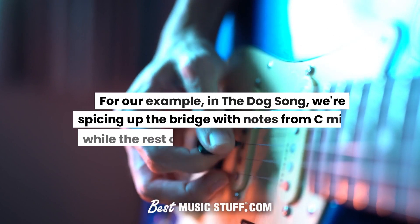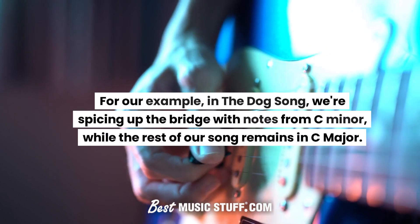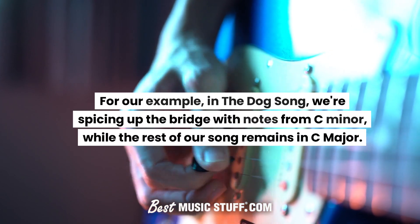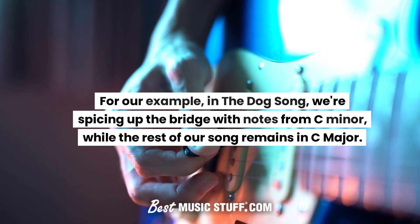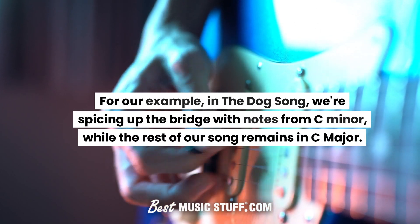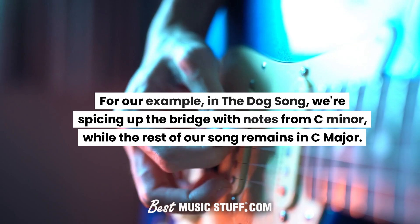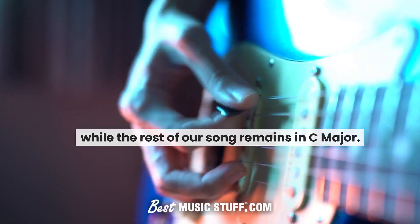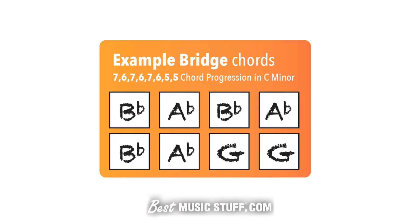For our example, in the dog song, we're spicing up the bridge with notes from C minor, while the rest of our song remains in C major. For those looking for a starting point, here's our example 8-bar bridge chord progression in the key of C minor. Play through it and feel the magic of a bridge.